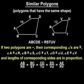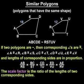Finally, given two similar polygons, the scale factor is the ratio of the lengths of two corresponding sides. For example, in the diagram shown,